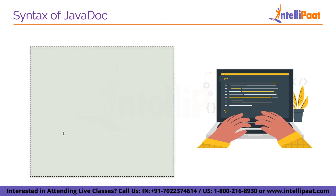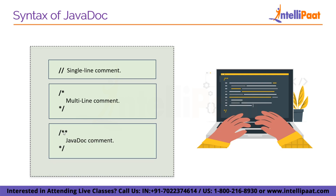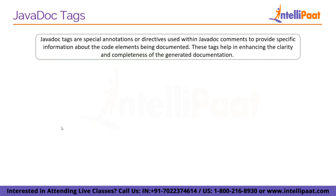Now we will look into the syntax of a Javadoc comment. A single-line comment uses one slash format, a multi-line comment uses one asterisk, and the Javadoc comment uses two asterisks — that is the only difference between the multi-line comment and the Javadoc comment. Writing comments does not affect the performance of a Java program as all comments are removed at compile time.